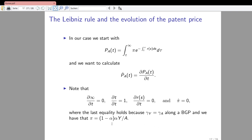The derivative of operating profits with respect to time is zero along the balanced growth path of this model. This is because profits of intermediate goods producers equal (1 − α) times α times aggregate output divided by the number of technologies. Along the balanced growth path, per capita GDP grows at the same rate as technological progress, so the numerator and denominator grow at the same rate and profits are constant — hence their time derivative is zero.